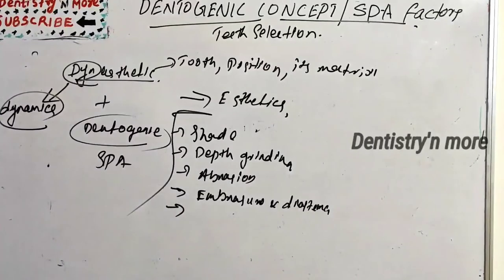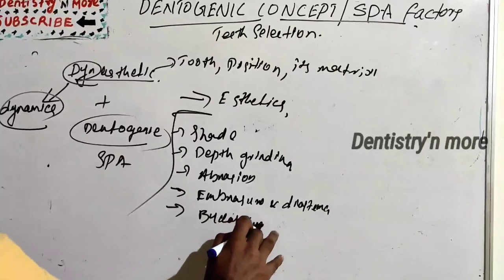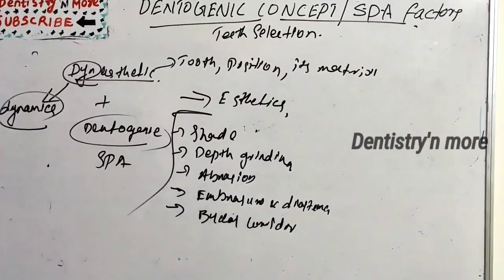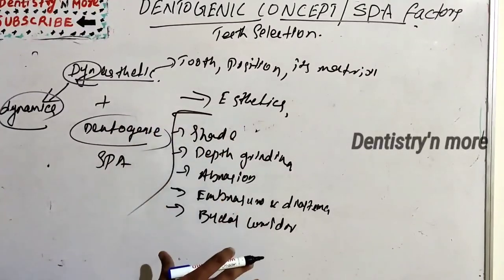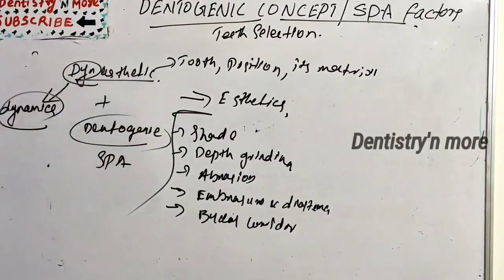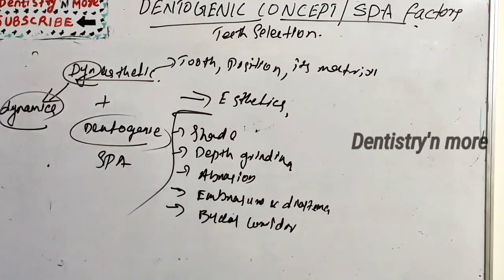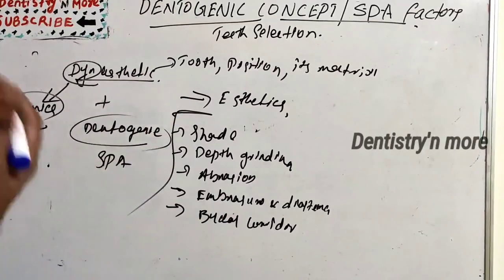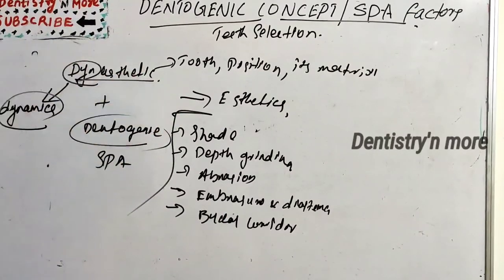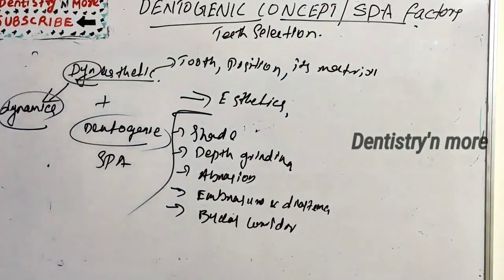The dynesthetic factors also include the buccal corridor, gum line, denture base contouring, and tissue stippling. All these — shade grinding, abrasion factors, embrasures, diastema, and buccal corridor — come under the secondary factors of the dentogenic concept, also called the SPA concept.